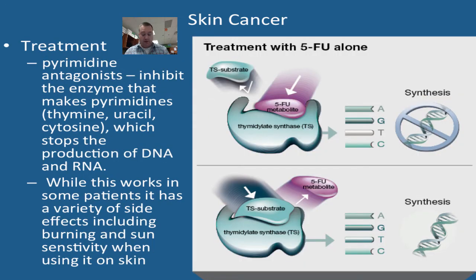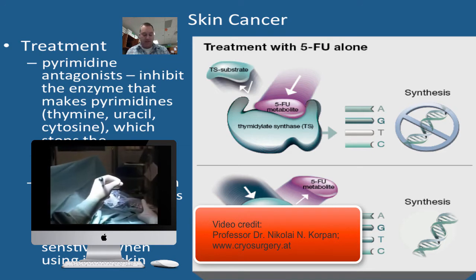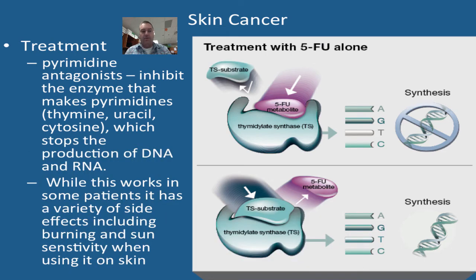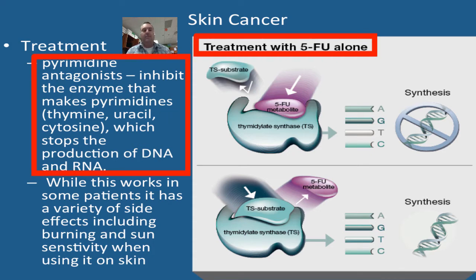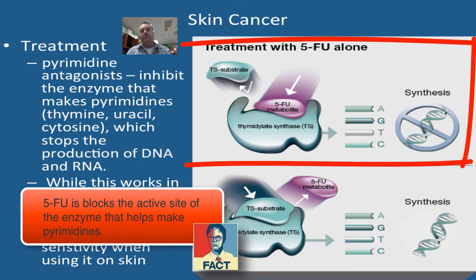One of the ways you can treat skin cancer is through surgery. A melanoma can be removed from the shoulder through cryosurgery or actual physical surgery. Another way is a type of chemotherapy — the 5-FU form of chemotherapy, which is a pyrimidine antagonist. Pyrimidines are types of nucleotide bases, for example thymine, uracil, and cytosine. The pyrimidine antagonist 5-FU prevents the enzyme that makes these pyrimidines from doing its job.